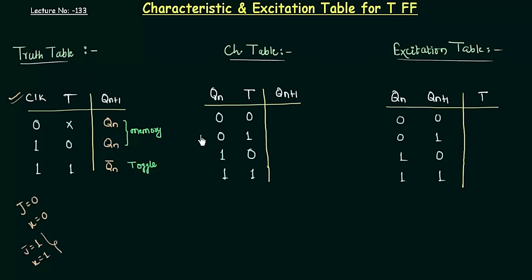It's very simple. The primary thing you must have is the truth table for any flip-flop whose characteristic table and excitation table you want to derive. Once we have the truth table, the next step is the characteristic table, because the characteristic table can only be derived from the truth table.